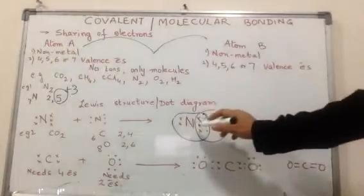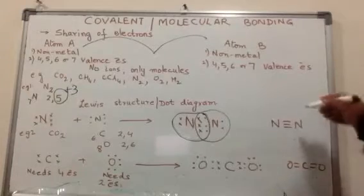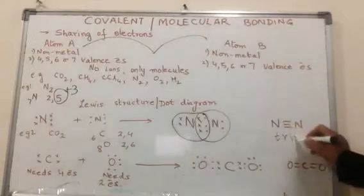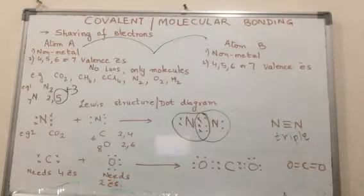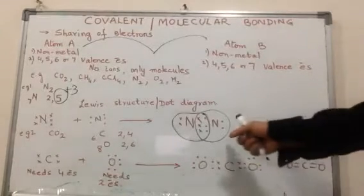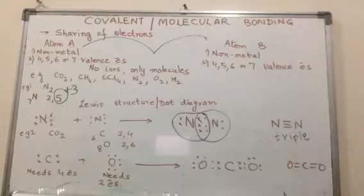Since three pairs of electrons are shared between the two nitrogen atoms, it is an example of triple covalent bond, represented by three dashes between the nitrogen atoms. This looks like the Venn diagram in mathematics.